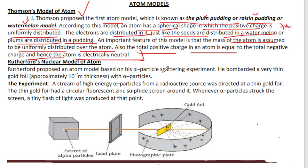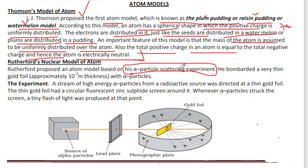Now we are looking at Rutherford's atom model, based on the gold foil experiment. Rutherford proposed an atom model based on his alpha particle scattering experiment. We are looking at Rutherford's atom and the alpha particle scattering experiment.